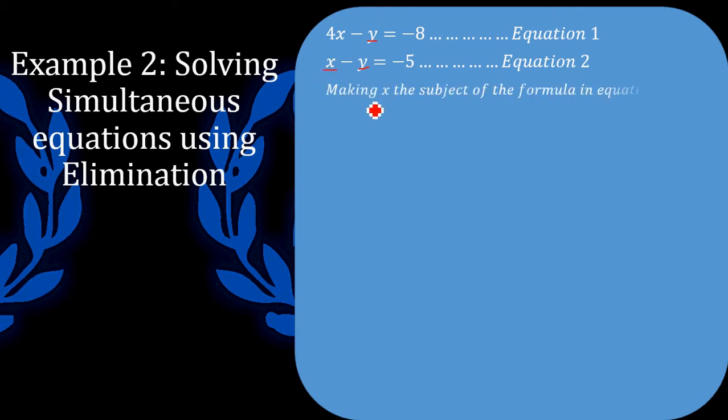So I am choosing x to make subject of the formula for equation number 2 and I will get that x is equal to negative 5 plus y. And notice again, I use equation number 2 to develop this equation number 3. So therefore, equation number 3 can be substituted into equation number 1.